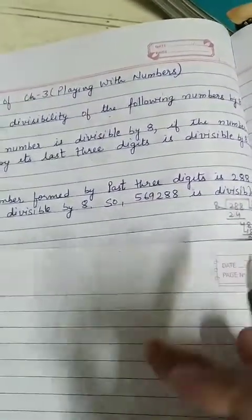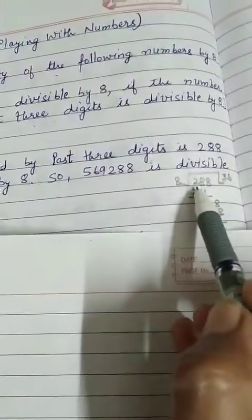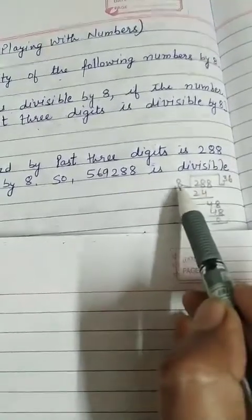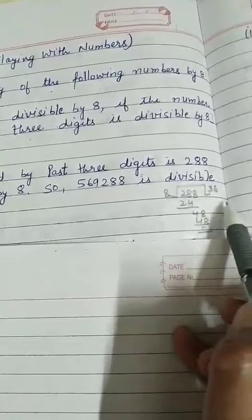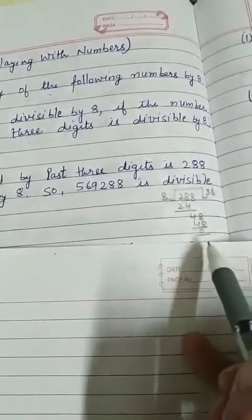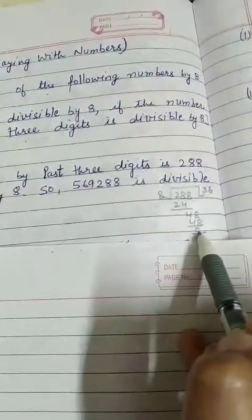Now, just see that on my right side, in the rough work, I have done the division, 288 divided by 8. So, the quotient comes 36, and the remainder is 0.